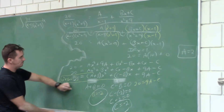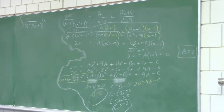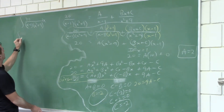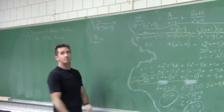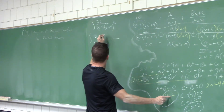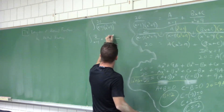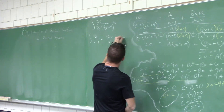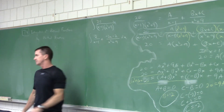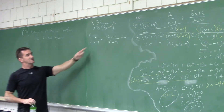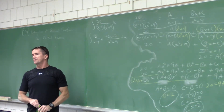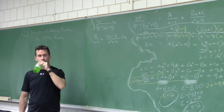Now write out the decomposition: A over (x minus 1) is 2 over (x minus 1). Plus (Bx plus C) over (x squared plus 9) is (negative 2x minus 2) over (x squared plus 9). The first term integrates to 2·ln|x minus 1|. For the second term, split the fraction.